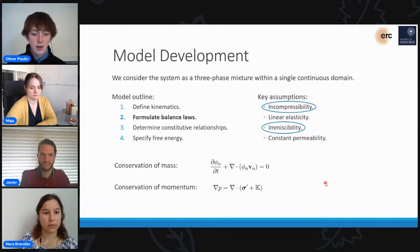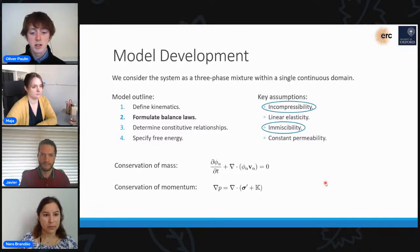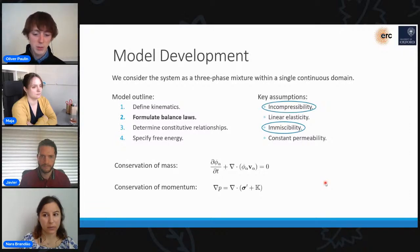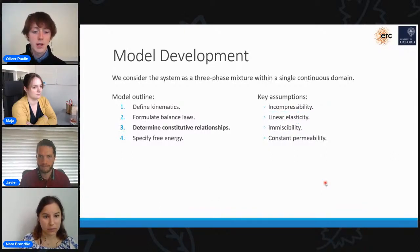We'll also consider conservation of momentum. And the assumptions that we've made here are that there are no body forces on the system. So we're not going to consider the effect of gravity, for example, and that we can decompose our stress tensor into three different terms. One due to the fluid pressure, P, one for the elastic stress, sigma prime, and one for the Korteweg stress, K, which just arises from internal interfaces that form within the system.